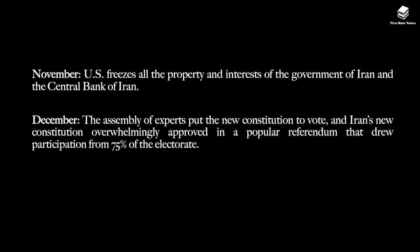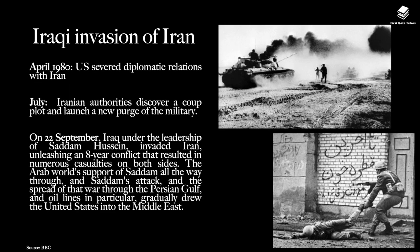In November, the US froze all the property and interests of the government of Iran and the Central Bank of Iran. In December, the assembly of experts put a new constitution to a vote, and Iran's new constitution was overwhelmingly approved in a popular referendum that drew participation from 75% of the electorate. In April 1980, the USA had effectively severed diplomatic ties with Iran. In July of the same year, Iranian authorities discovered a coup plot and launched a new purge of the military. On 22nd September, Iraq, under the leadership of Saddam Hussein, invaded Iran, unleashing an eight-year conflict that resulted in numerous casualties on both sides. The Arab world's support of Saddam and the spread of that war through the Persian Gulf and oil lines in particular gradually drew the US into the Middle East.